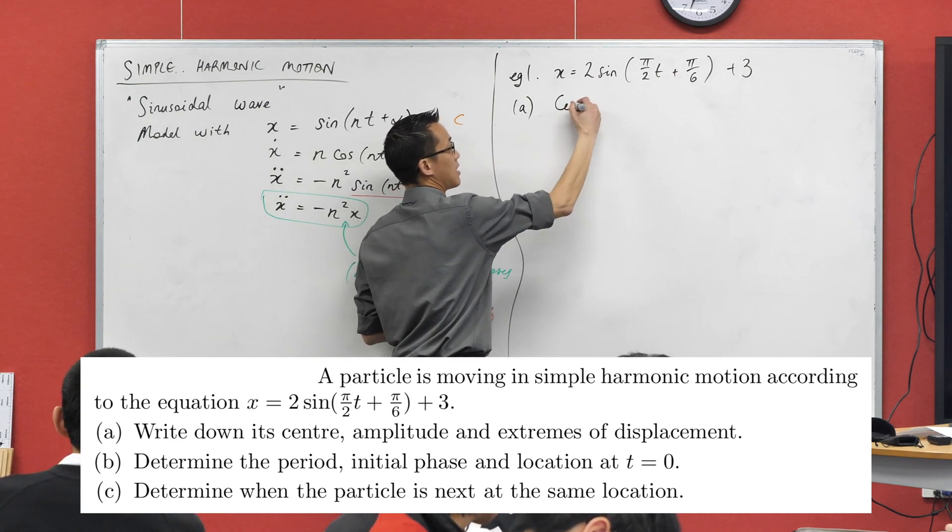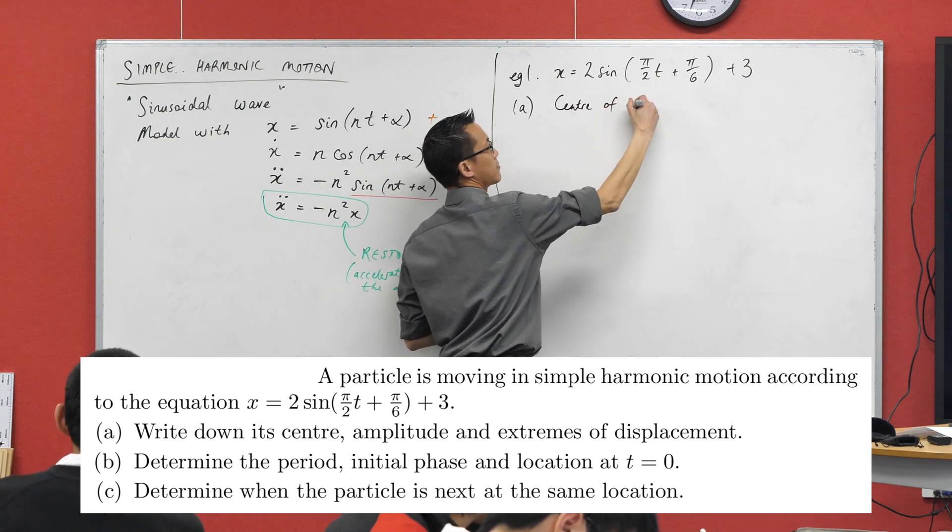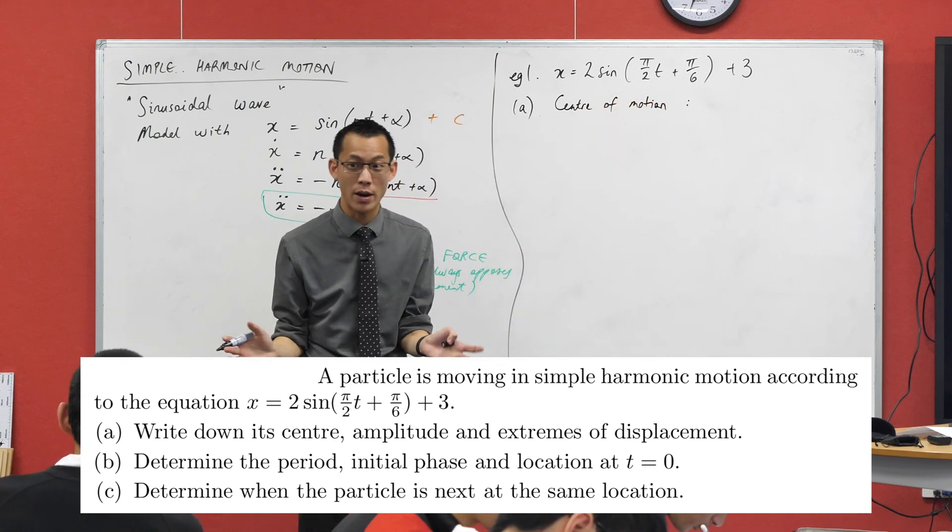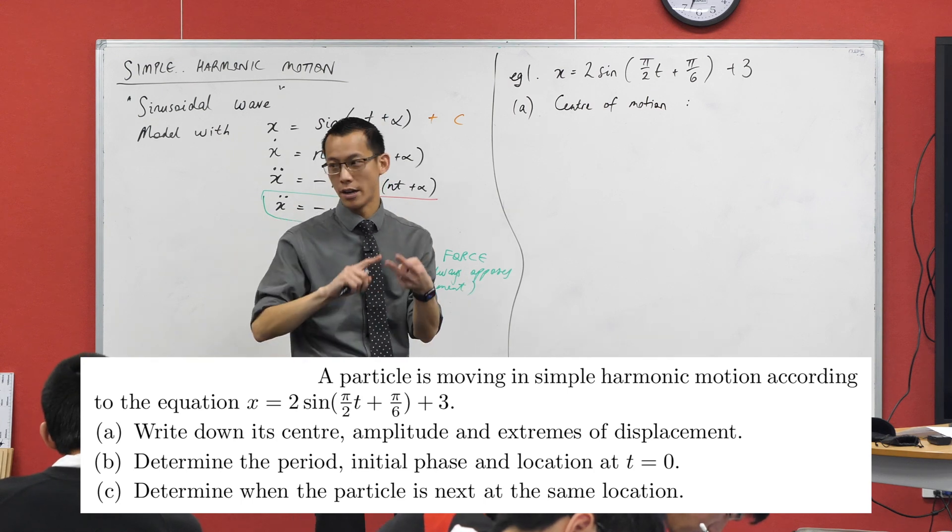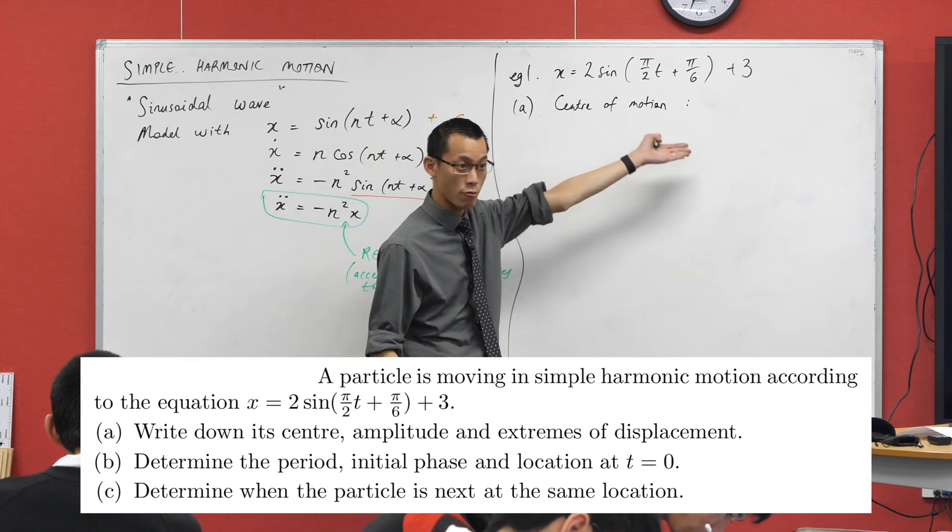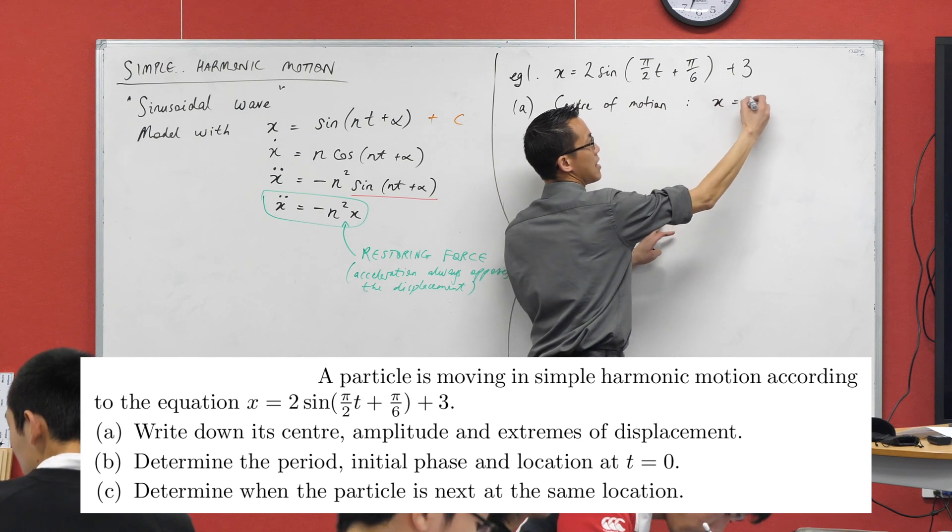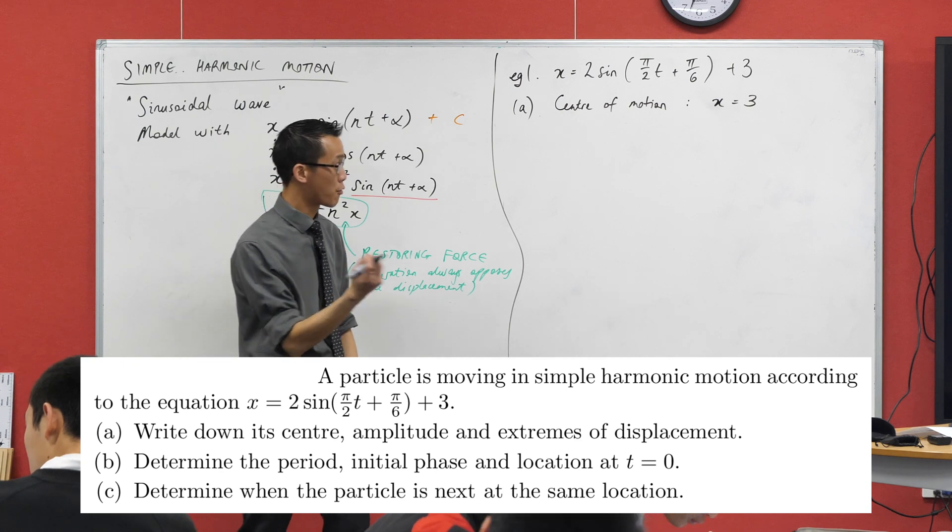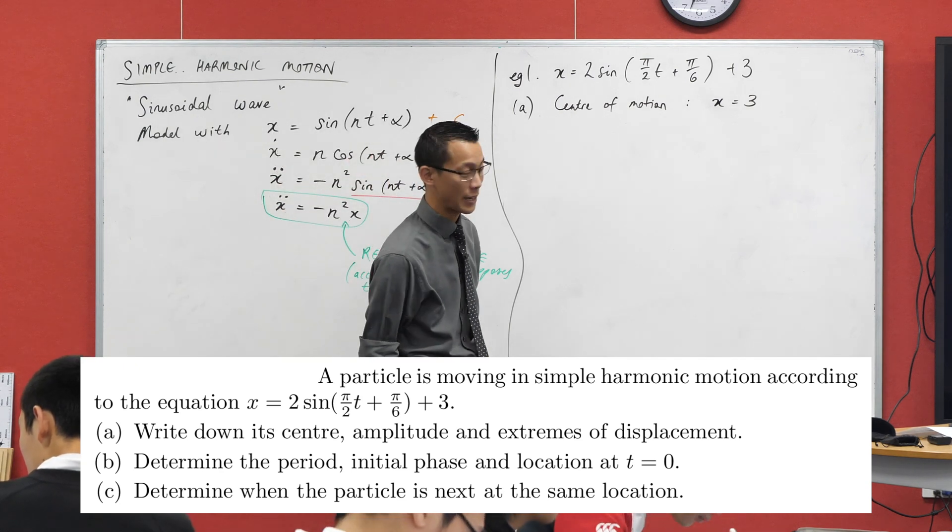So I'm just going to say center of motion, and because I've got lots of equations that are going to be flying around for displacement, velocity, and acceleration, I'm not just going to say it's three, I'm going to say it's x equals three, because that's what displacement is. It's x. Choose the right pronumeral, you're going to have a lot flying around.